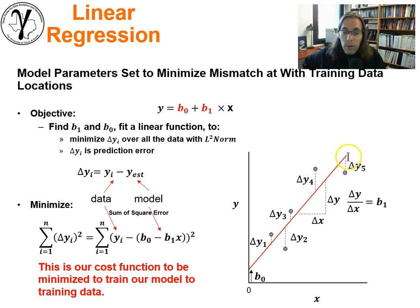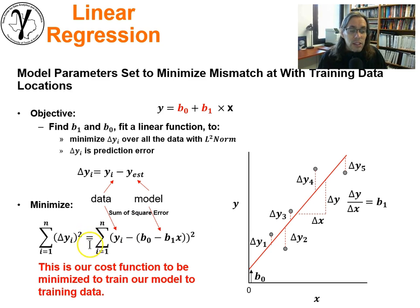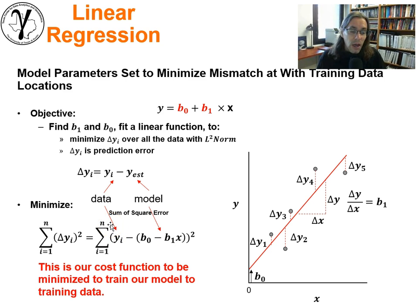We can formulate the problem by looking at the data, the predictor feature, the response feature. This is the model that we're trying to fit. These are the error terms between the model and the response feature for each one of the predictor feature values at the training data locations. Our loss function is simply going to be an L2. We want to minimize the sum of the squares of the error, the actual true values versus the model values, in order to fit the best model.